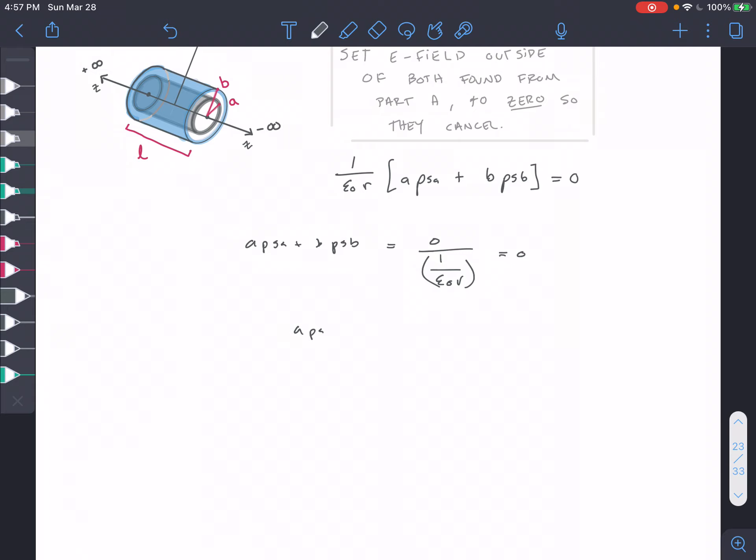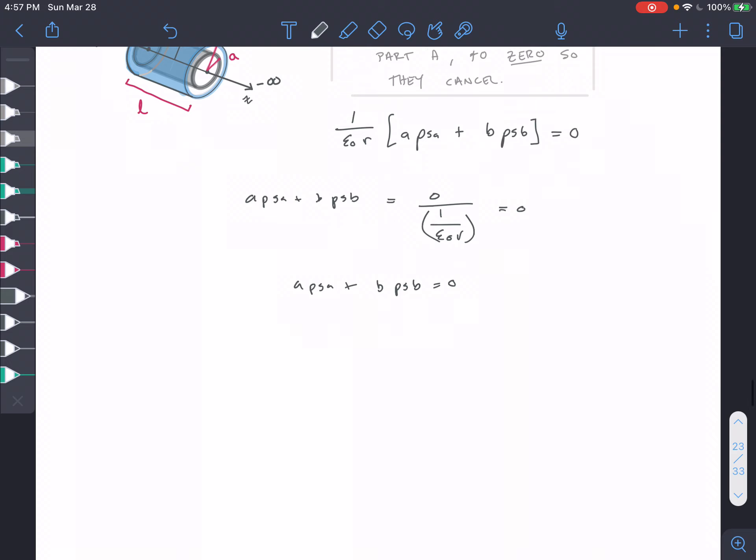So you have A ρ_SA plus B ρ_SB equals 0. So A ρ_SA equals negative B ρ_SB, right?